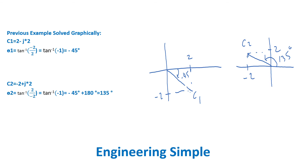We can also solve the previous example graphically. Looking at the graph to the left, which is a representation of c1, the direction is counterclockwise, and from the horizontal line it is negative 45 degrees. Looking at the graph to the right, which is a representation of c2, going counterclockwise from the horizontal line, it is 135 degrees.